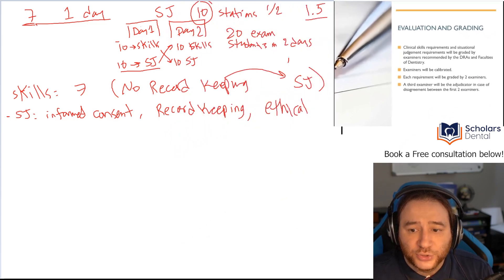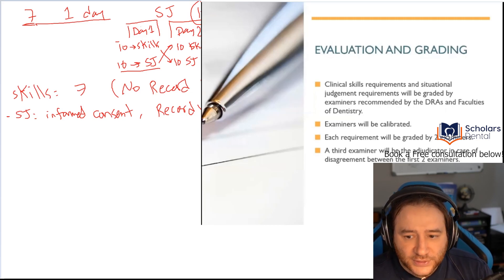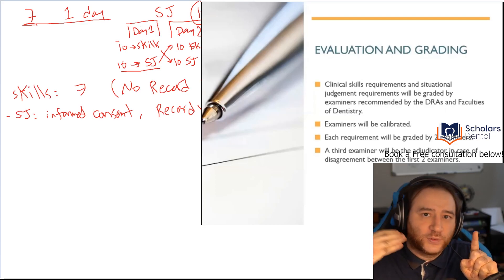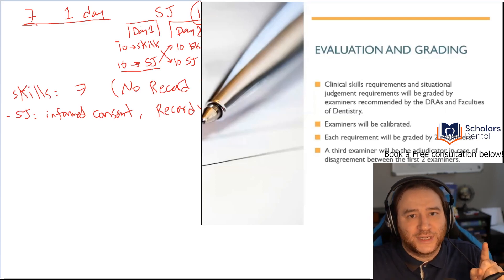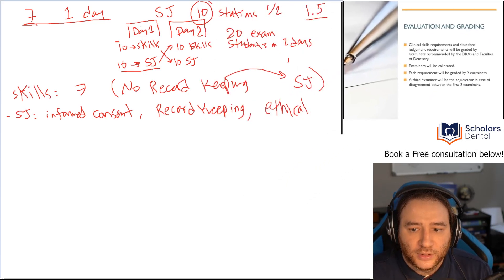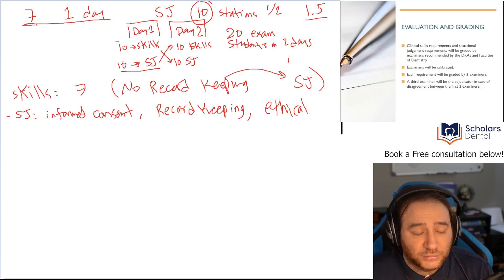Each requirement will be graded by two examiners. So two people will grade your work, and then there's a third person for a tiebreaker. If the two people that are grading your work don't agree on something, the third person will decide, and then that way we'll take your score to a direction. Pretty much they're trying to minimize any subjectivity in your marking. I think that's a good thing.